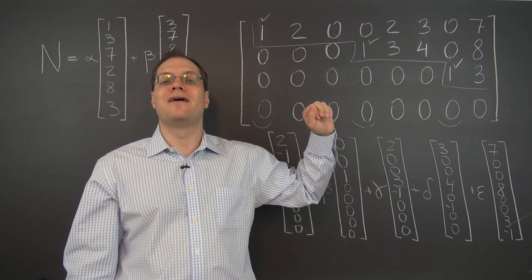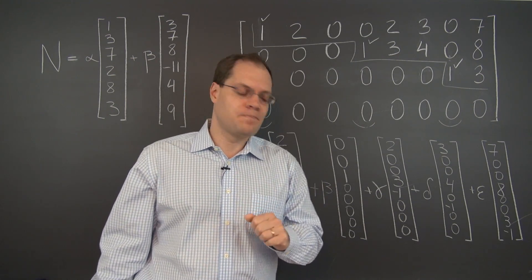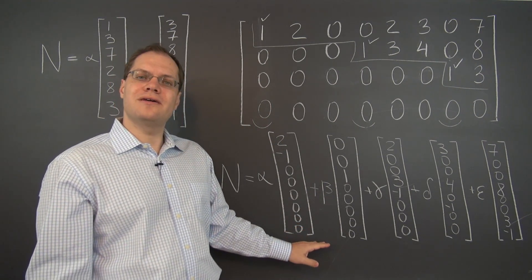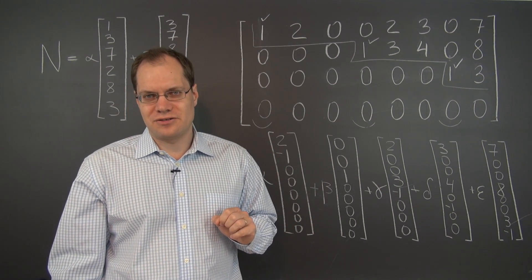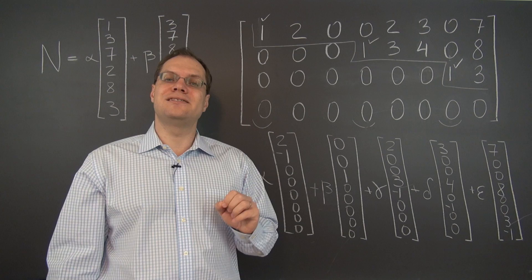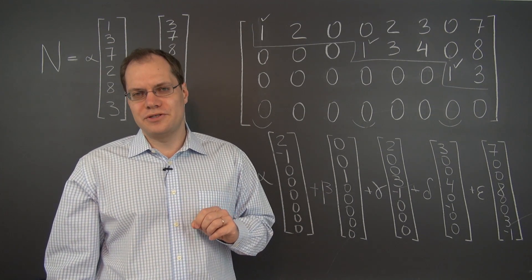I don't want to tell you whether the answer is yes or no, but you should realize that knowing the null space actually tells us a lot about the matrix. The question is, is it enough to determine all of the row reduced echelon form?